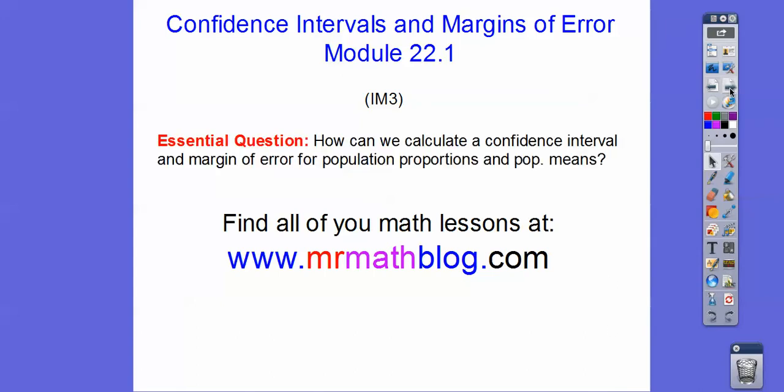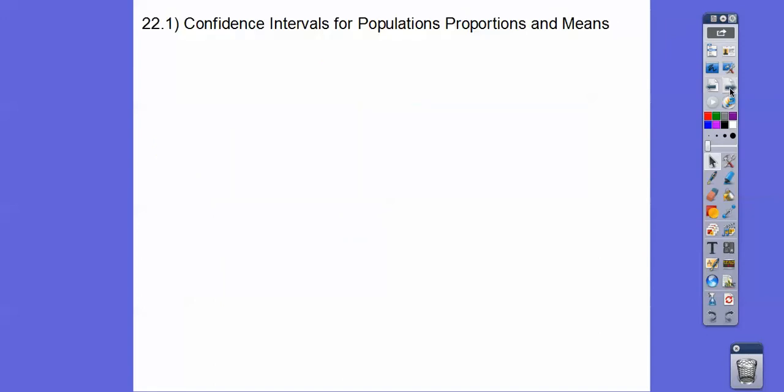So here we go. How can we calculate a confidence interval and a margin of error for population proportions and population means?